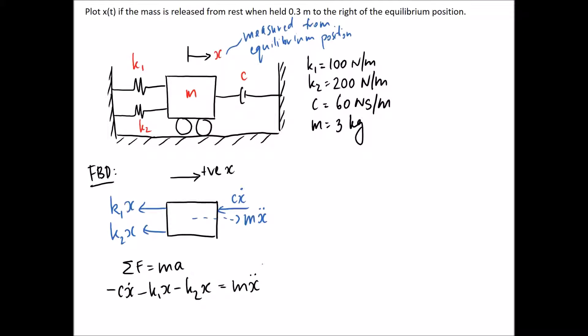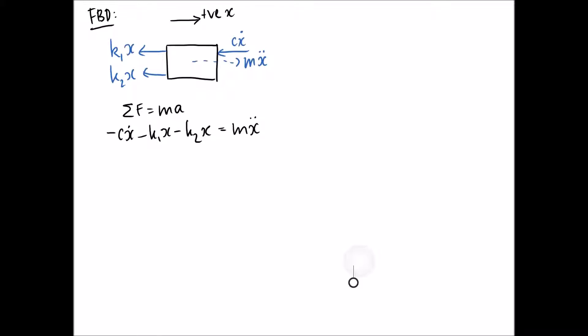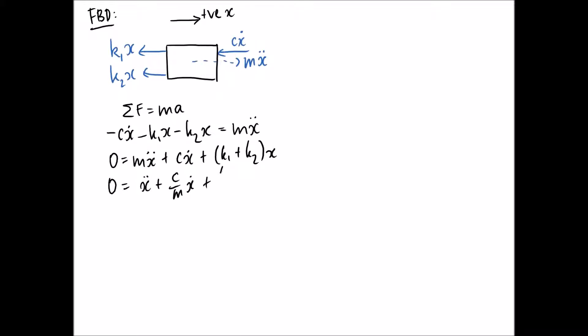Now we rearrange the equation into a useful form by putting everything on one side: 0 equals m·x-double-dot plus c·x-dot plus (k1 + k2)·x. To normalize, we want a coefficient of one in front of x-double-dot, because that matches the general form with ωn and ζ. So we divide everything through by m.